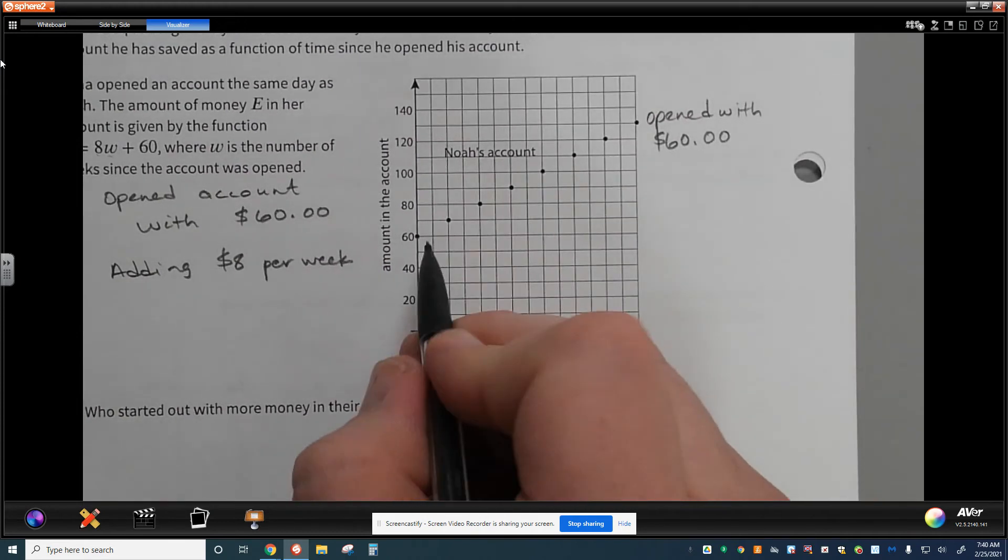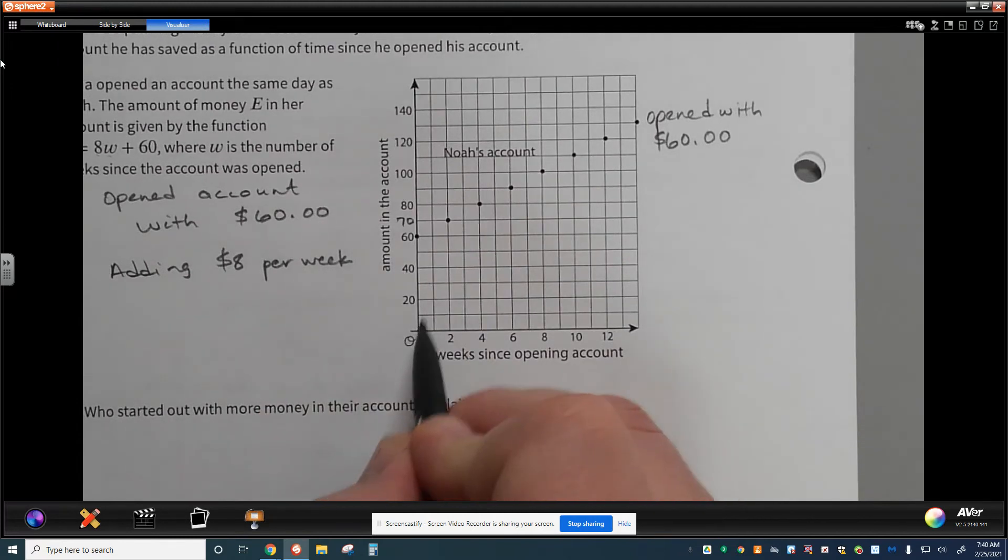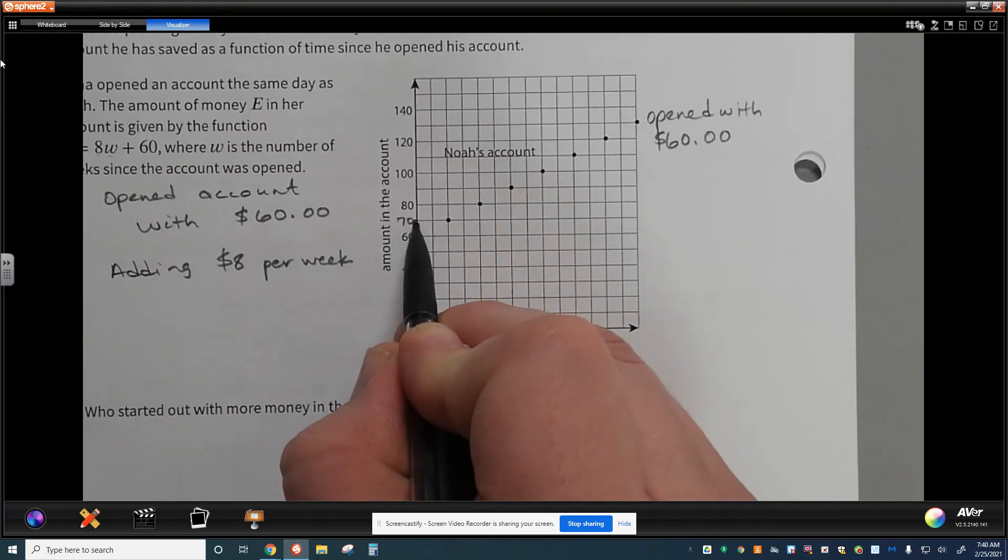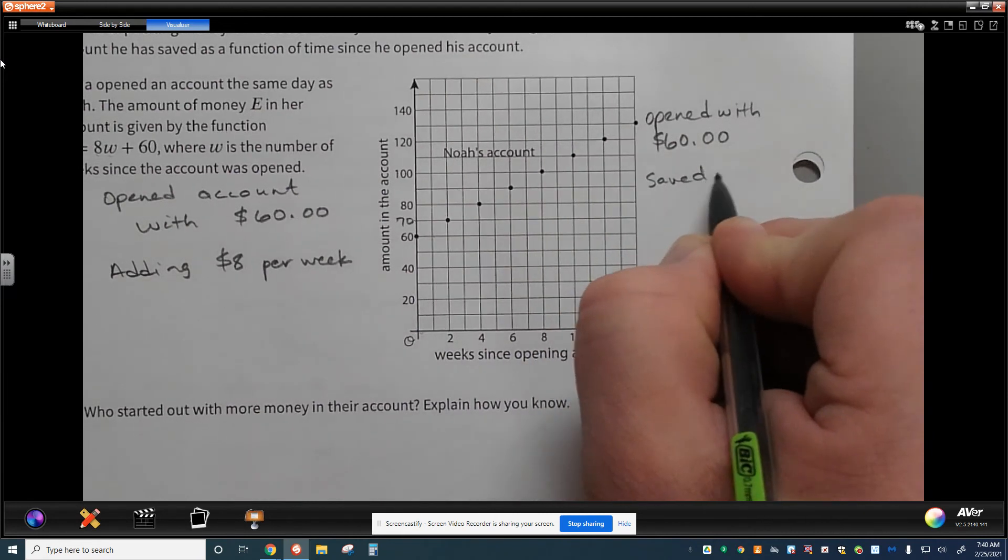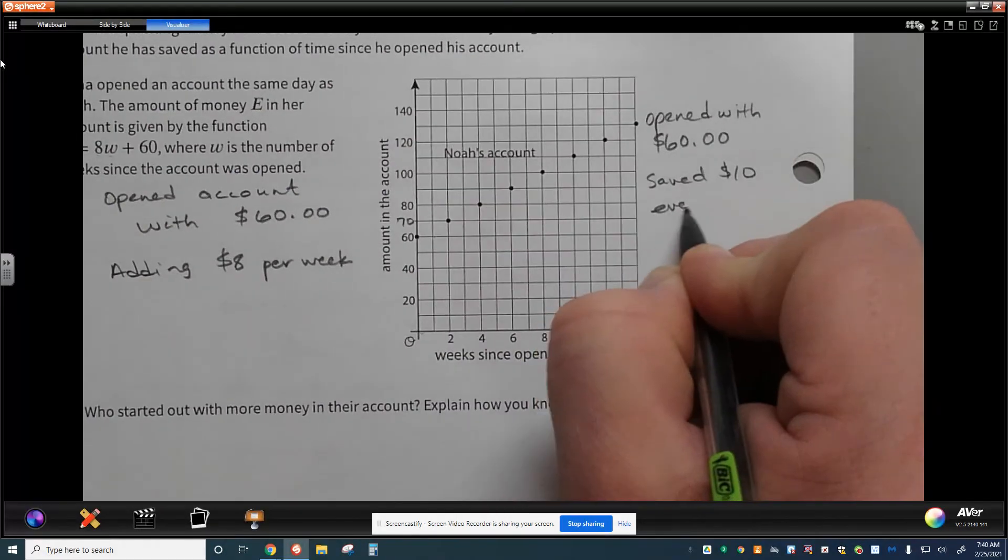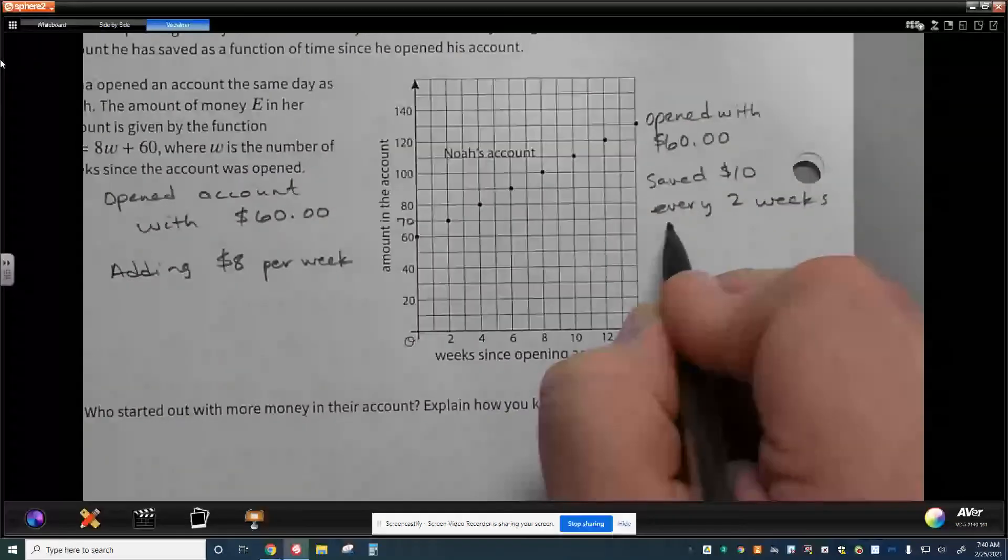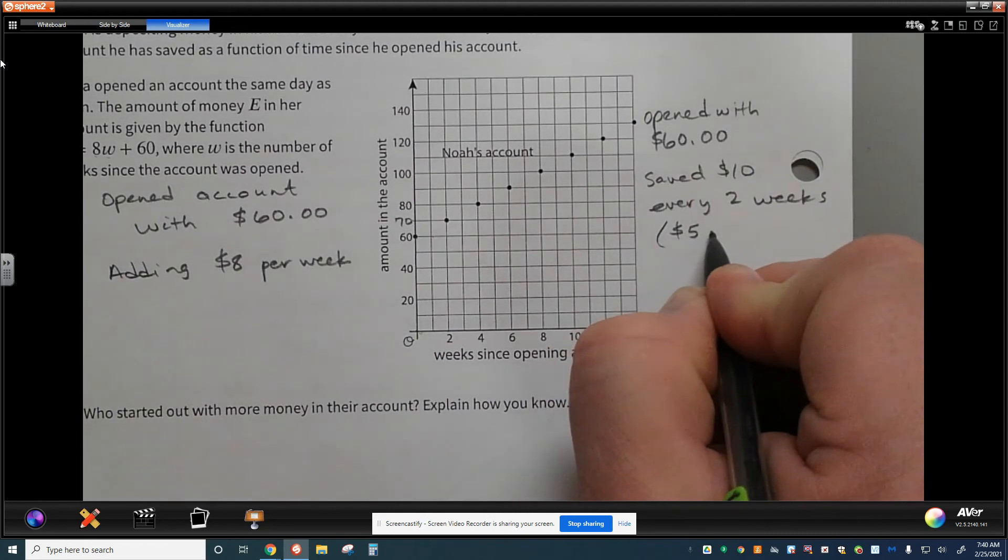And let's see how this works out. This would be 70 right here. And I see that that space of time until the next dot is going, or the next graph point, is two weeks. So that looks like $10 every two weeks. And so what I can think of with that is if he's saving $10 every two weeks, then we're saying that he saved $5 each week.